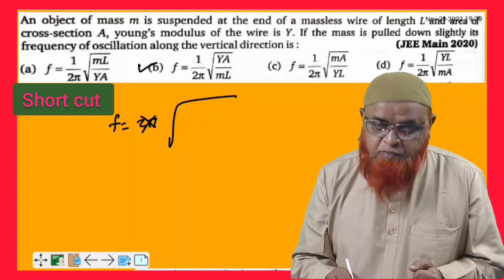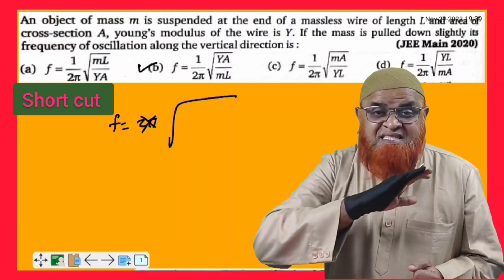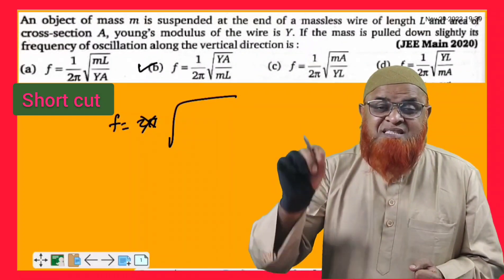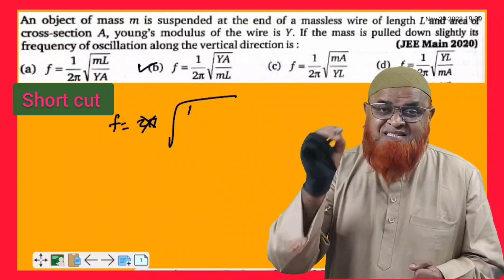Why? Young's modulus. Young's modulus means stress by strain. Strain does not have any units because strain means a ratio. Only stress is having units.